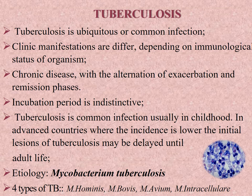Tuberculosis has several peculiarities. It is a ubiquitous or common infection. Clinical manifestations differ depending on the immunological status of the organism. It is a chronic disease with alternation of exacerbation and remission phases.